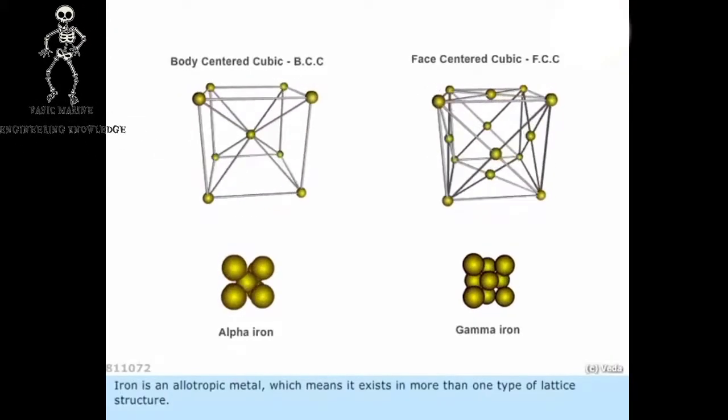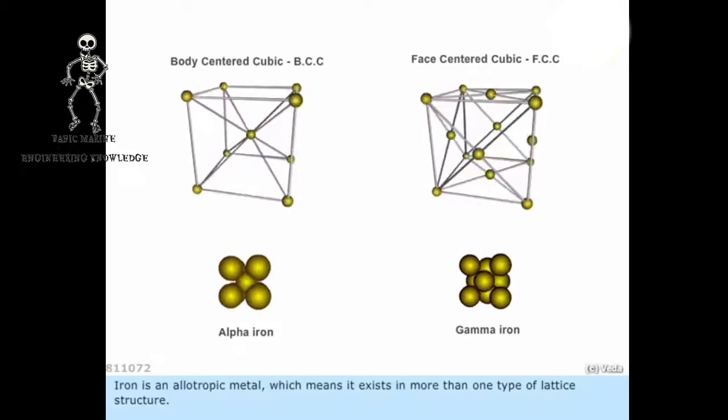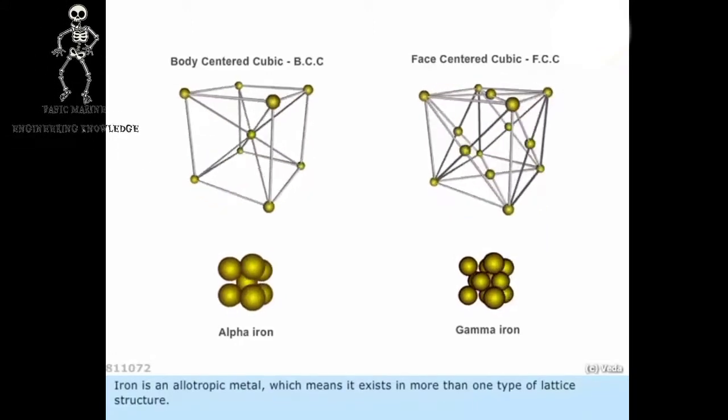Iron is an allotropic metal, which means it exists in more than one type of lattice structure.